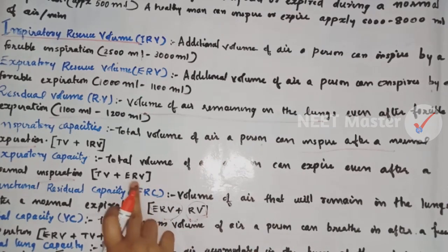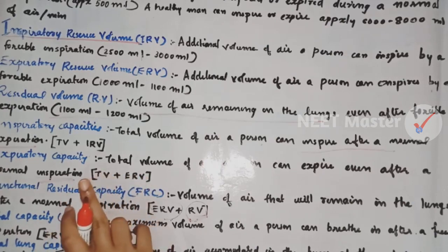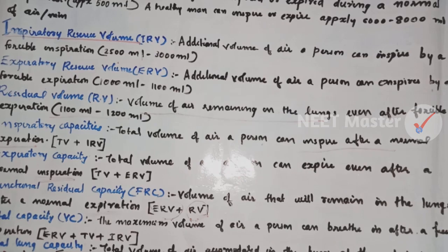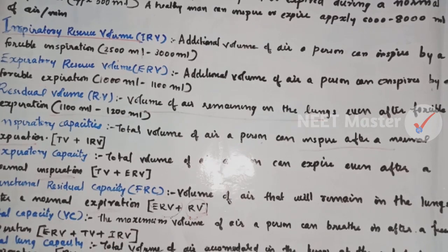Reviewing: the first expression involves ERV — the first expression of total volume of air. Even after a normal expiration, we have TV plus ERV. Functional residual capacity, FRC, is the volume of air remaining in the lungs after a normal expiration — that is ERV plus RV. Vital capacity is the maximum volume of air a person can breathe in after a forced expiration or breathe out after a forcible inspiration — ERV plus TV plus IRV.